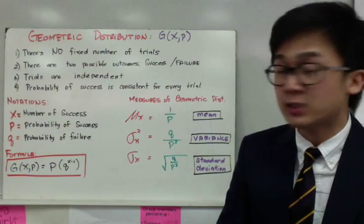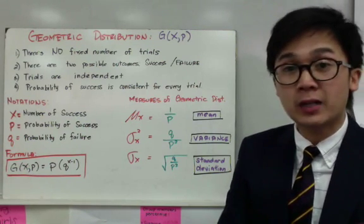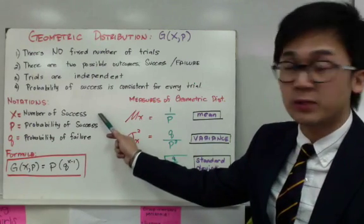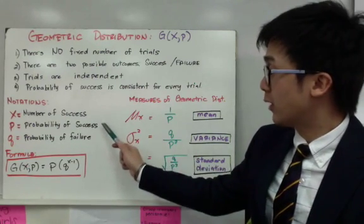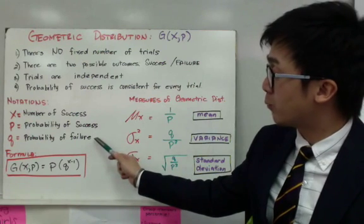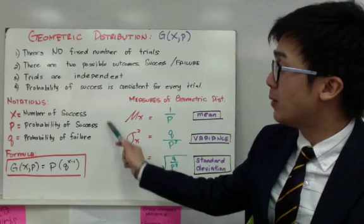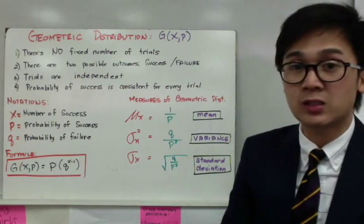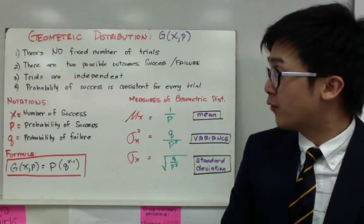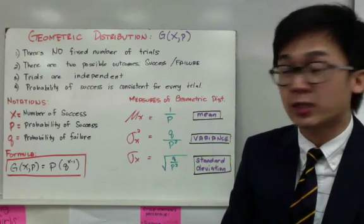For notation, since there is no fixed number of trials, you only need X (the number of successes), p (the probability of success), and q (the probability of failure) to answer probability questions involving geometric distribution.